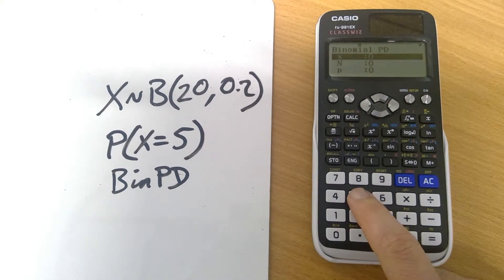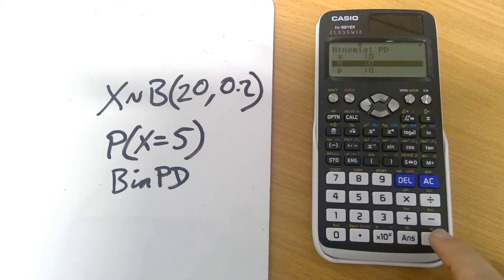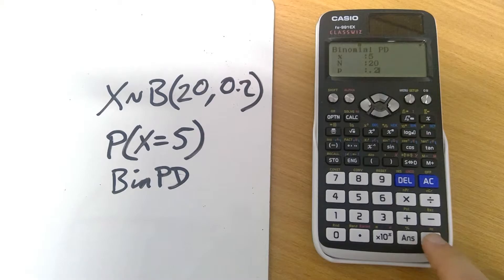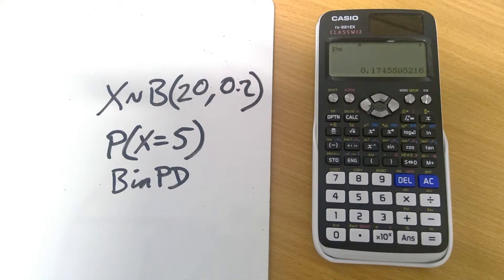Here I want X to equal 5. Press equals. I want N to be 20. And I want P to be 0.2. Pressing equals will simply calculate that, there's our value for P. That's the probability of 5 successes out of the 20 trials. Nice and straightforward.